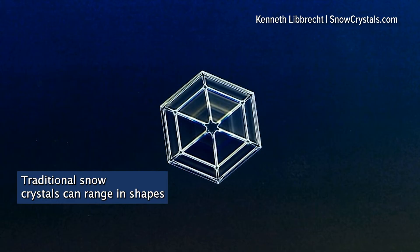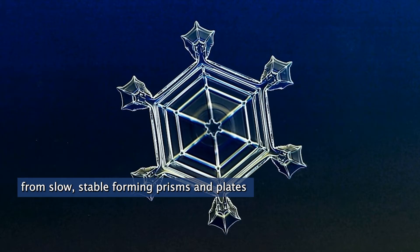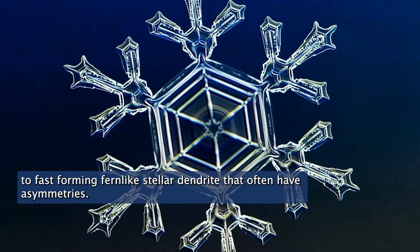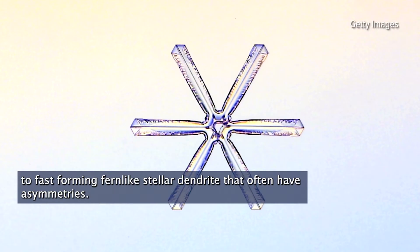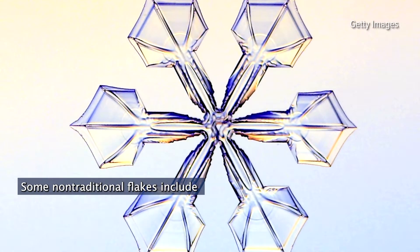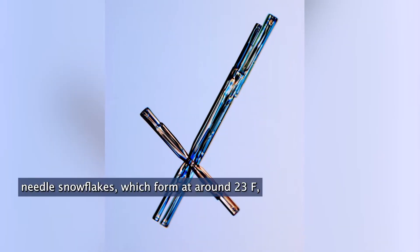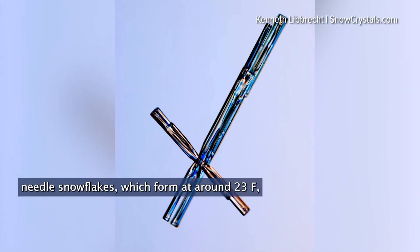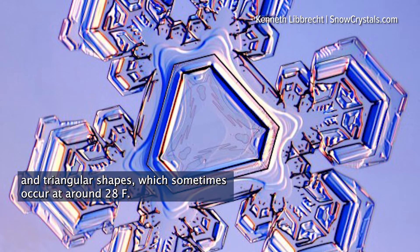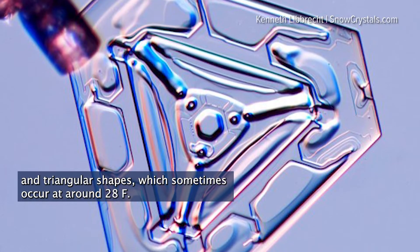Traditional snow crystals can range in shapes from slow, stable forming prisms and plates to fast forming, fern-like stellar dendrites that often have asymmetries. Some non-traditional flakes include needle snowflakes, which form at around 23 degrees Fahrenheit, and triangular shapes, which sometimes occur at around 28 degrees Fahrenheit.